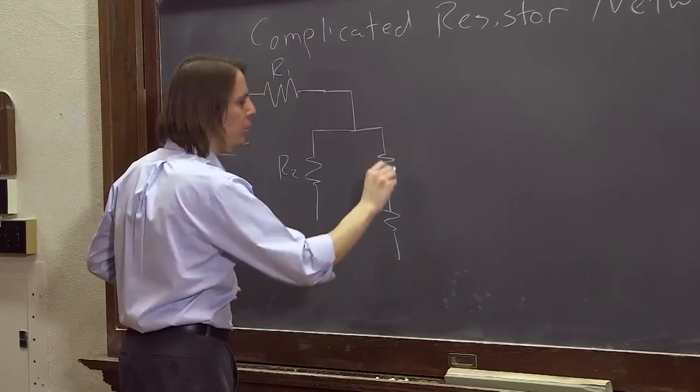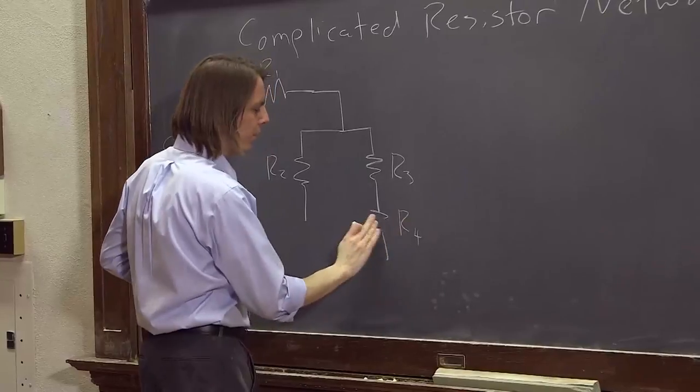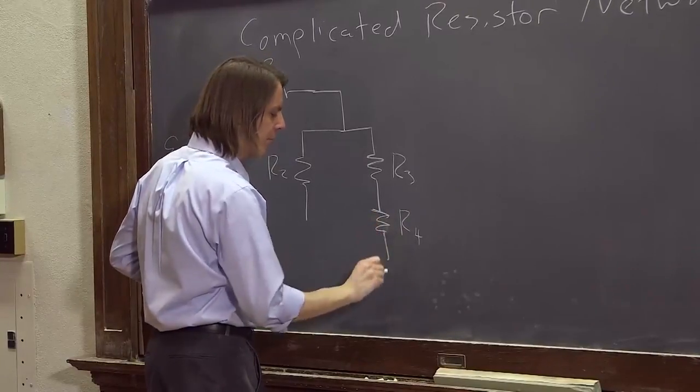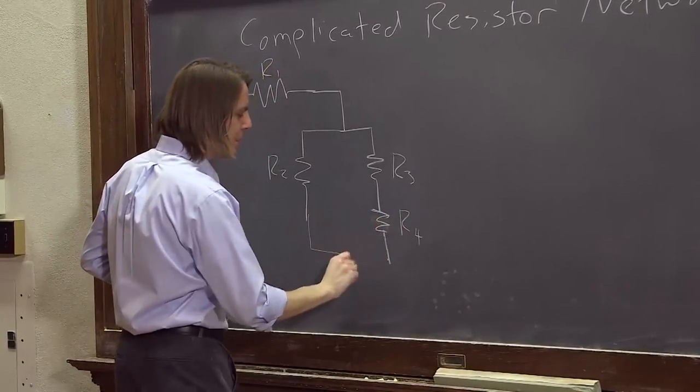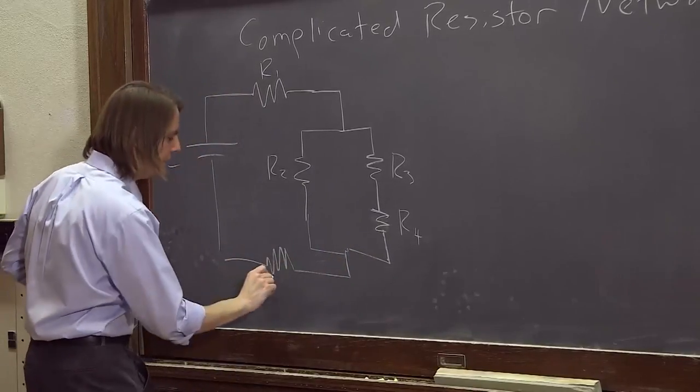and then two resistors here, R3 and R4. My resistor symbols are starting to suffer. And then that branch comes back together. And on the way back, you throw in R5.